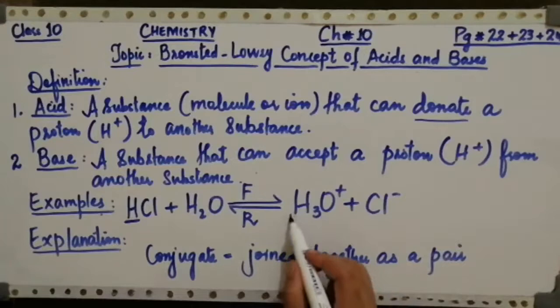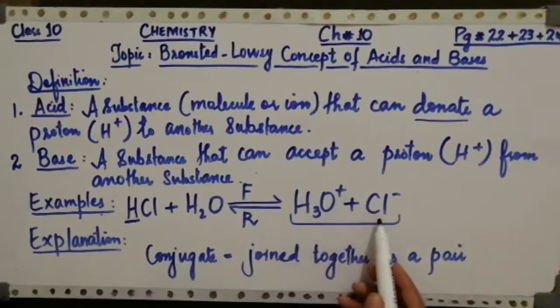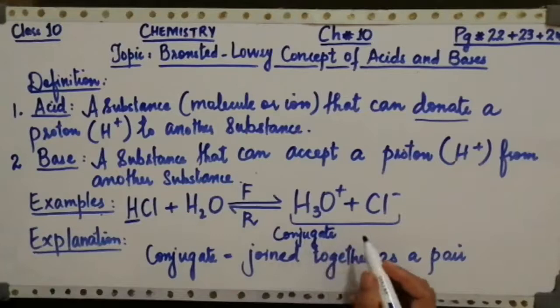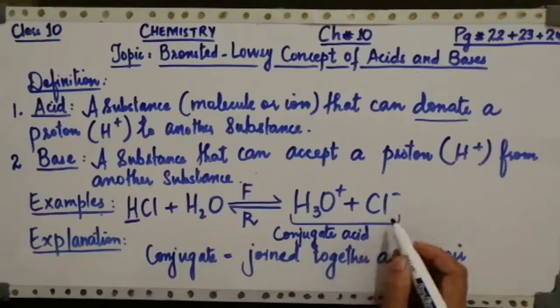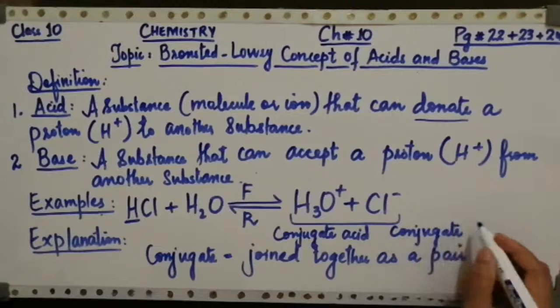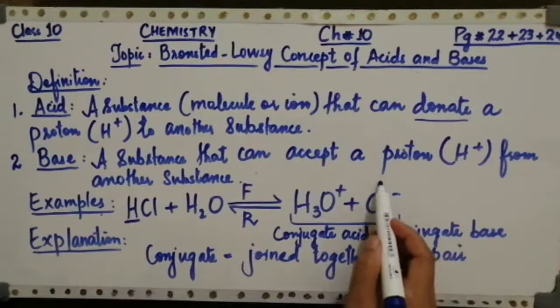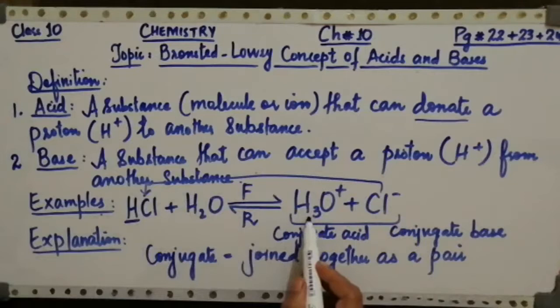The pair here is between hydronium ion having a positive charge and chloride ion having a negative charge. Hydronium ion is a conjugate acid and chloride ion is a conjugate base. Chloride ion is the conjugate base of hydrochloric acid, and hydronium ion is the conjugate acid of water, H2O.